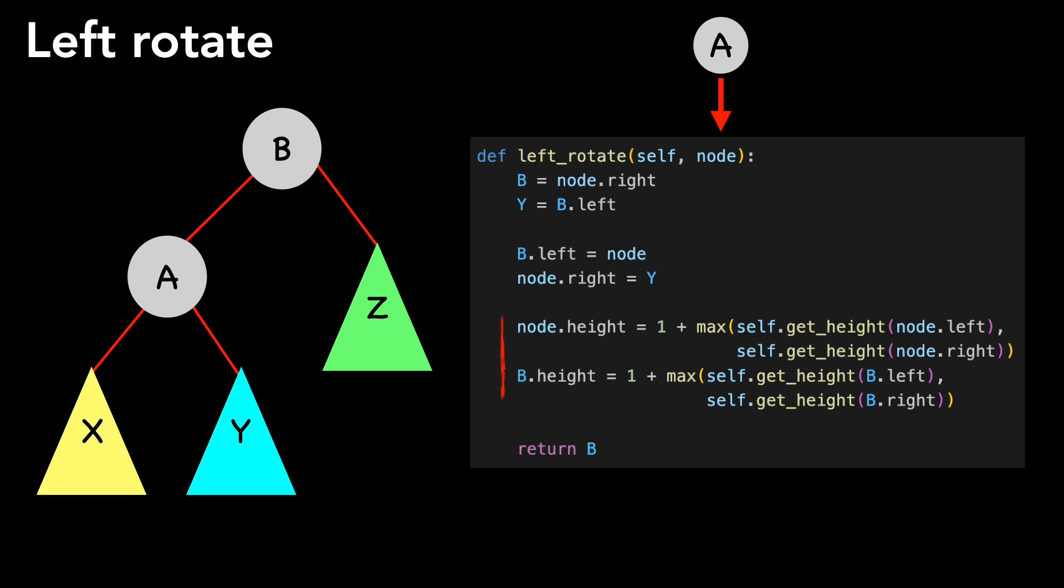We then update the height of A and B after rotation. The height becomes one more than the max of the left and right subtrees. Please pause the video if you need a minute to review the code. The code for right rotate, of course, is symmetrical. Note that these are all constant time operations. So the runtime for left and right rotate is big O of one.